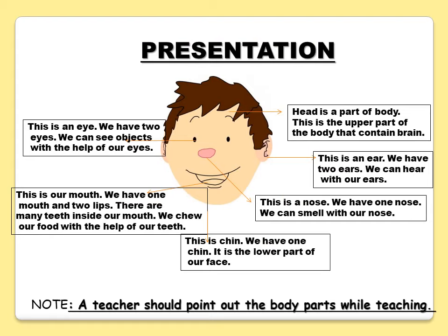Head is a part of the body. This is the upper part of the body that contains the brain. This is an ear — we have two ears and we can hear with our ears. This is a nose — we have one nose and we can smell with our nose.